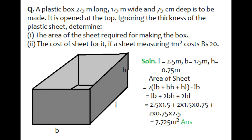The equation we get is LB plus 2BH plus 2HL. After replacing the values — 2.5 and 1.5 for length and breadth, and 0.75 meter for height — we get the answer for area of sheet as 7.725 meter square.